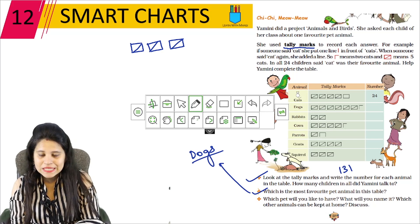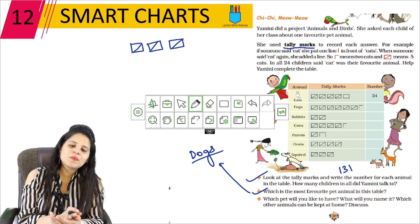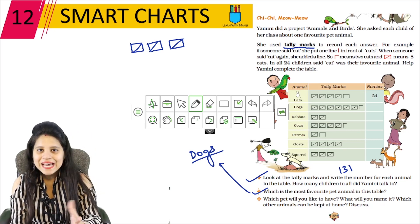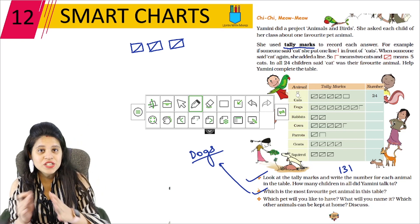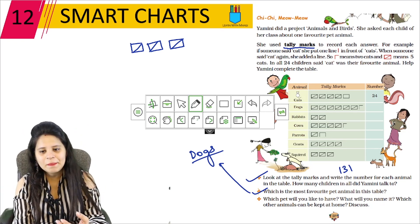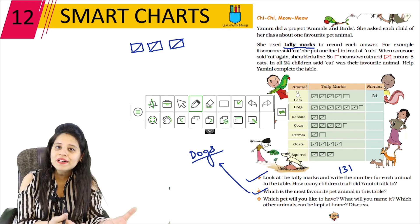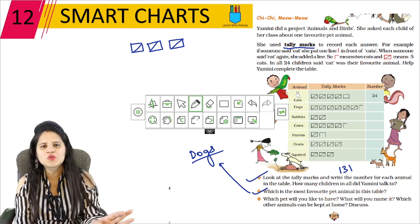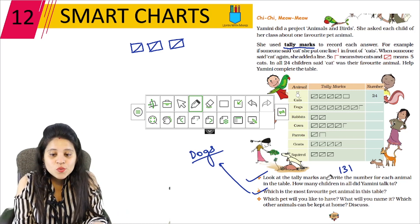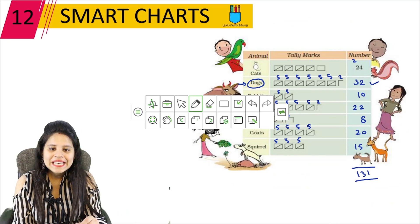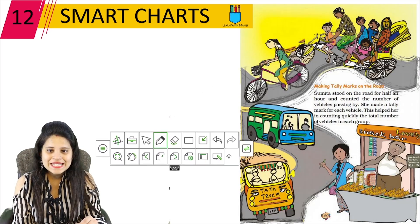Next question: which pet would you like to have, what will you name it, which other animals can be kept at home? Discuss. So here you need to tell which pet, what name it is, and which other animals we can keep in the house. Fishes can be found in an aquarium. So there are a lot of pets. You can tell that you can keep a dog, a rabbit, a parrot and you can give them a name. So this was our page number 159. Let's move to the next page. So coming to page 160.